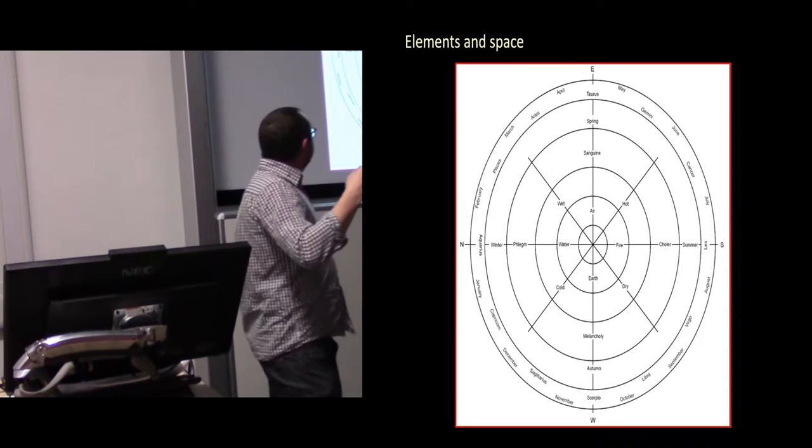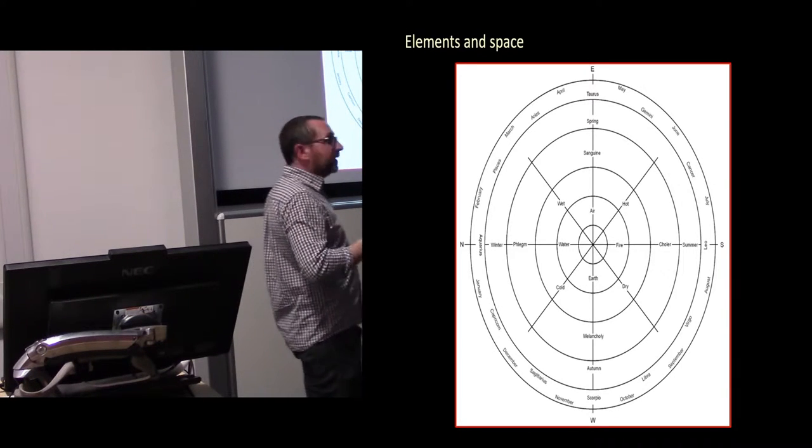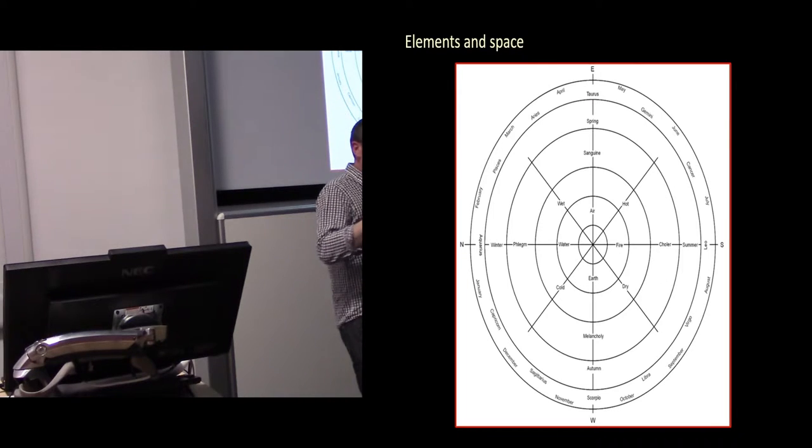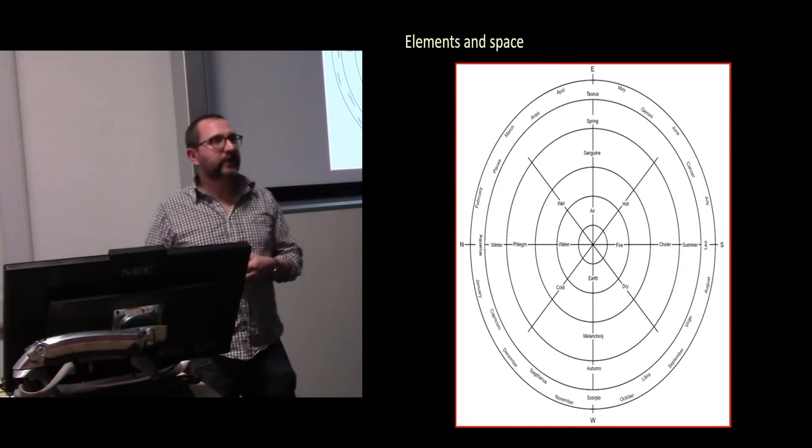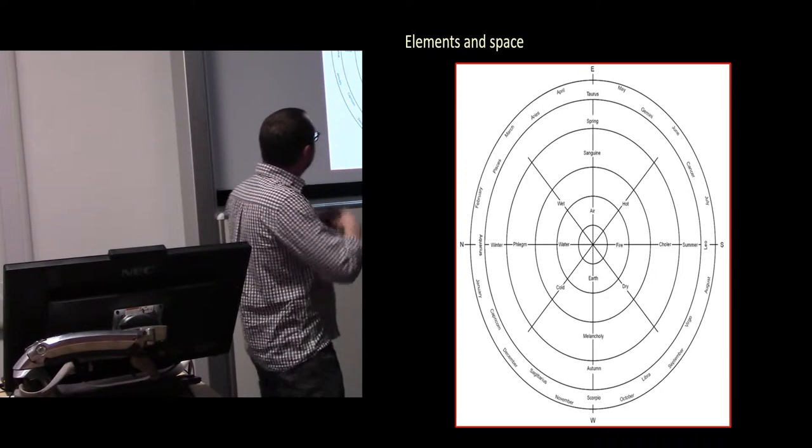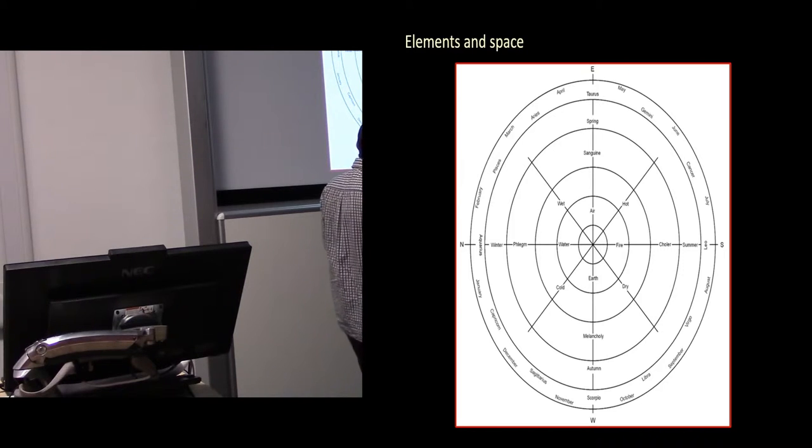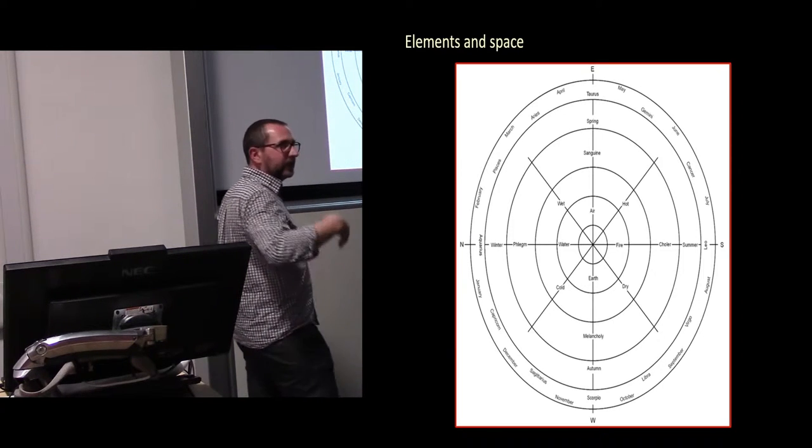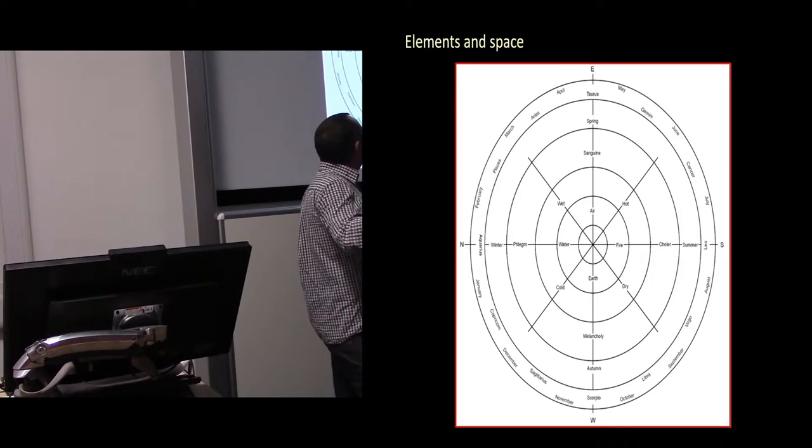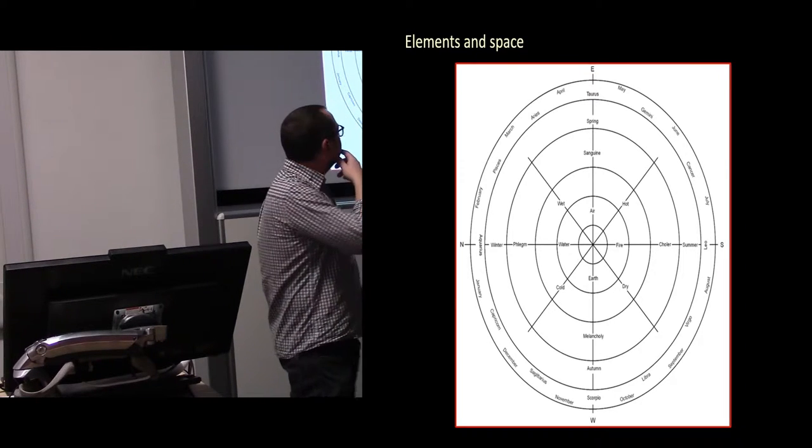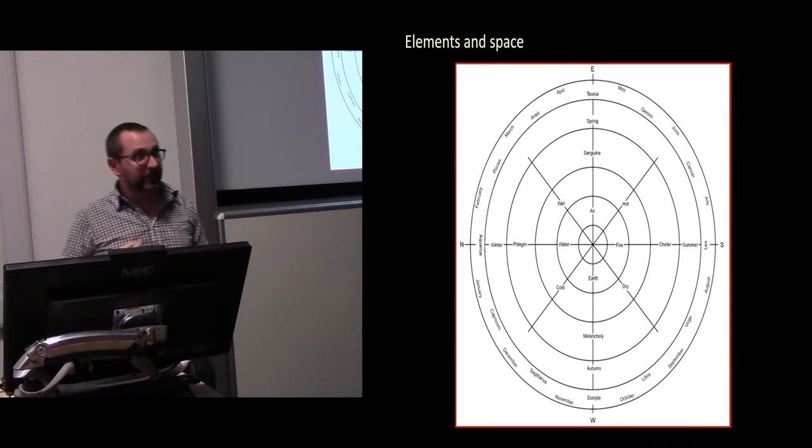I'm only going to go this far now, because I only have a couple of minutes left. But the elements map into people's conception of space too. So the cardinal points here, you can see that map onto this wheel. And so we've got really interesting associations. We've got air associated with sanguinity, associated with the season of spring, associated with Taurus, and the months of spring, and to the east as a direction.